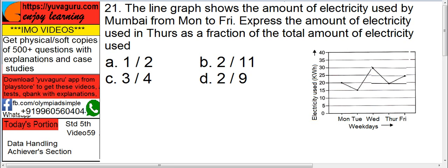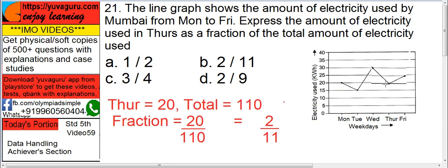Understand the problem first. We have to find out the fraction of Thursday's electricity with respect to the total electricity.